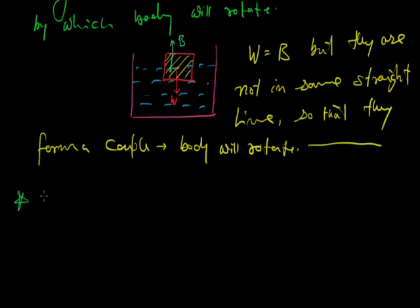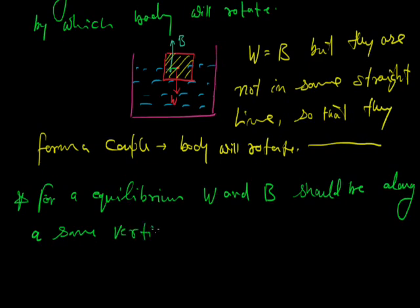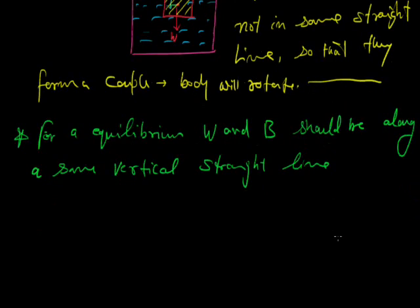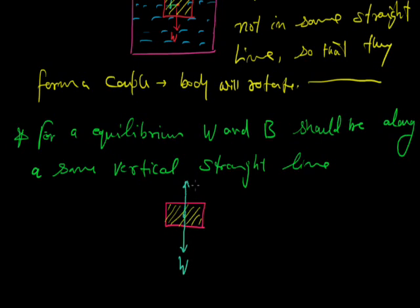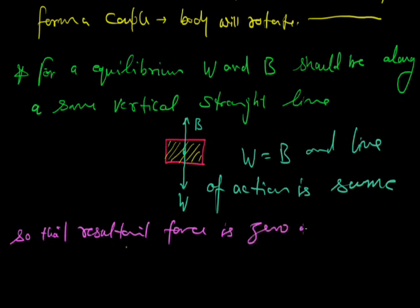For equilibrium, W and B should be along the same vertical straight line. It means weight of the body and buoyant force should be along the same vertical straight line. Here W equals B and the line of action is the same, so the resultant force is zero and the body is in equilibrium.